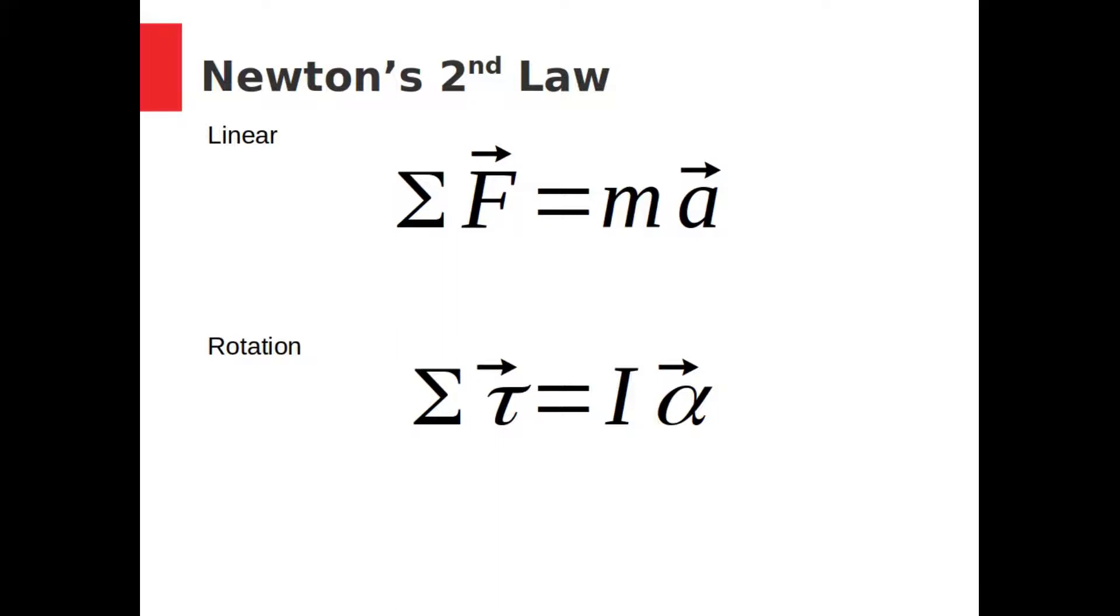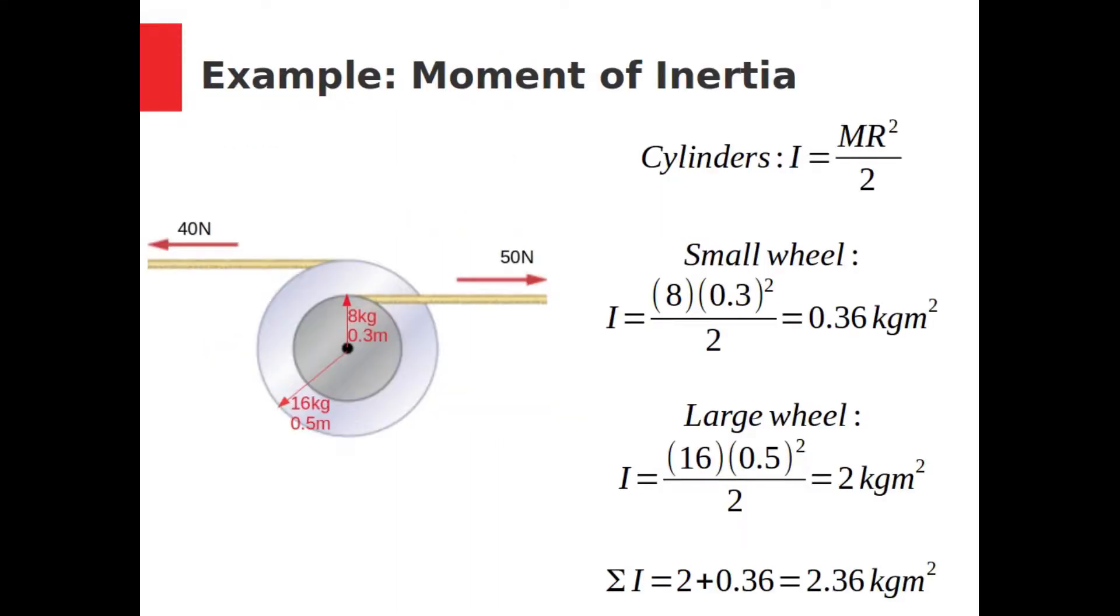Let's apply this to determine the angular acceleration of the wheels from earlier. The moment of inertia of the system is just the sum of the moments of inertia of each wheel. Suppose the smaller wheel has a mass of 8 kg, and the larger wheel a mass of 16 kg. Then the moment of inertia of the smaller wheel around its center is given by this equation. We saw the standardized moment of inertia equations for different shapes in the last video. We can work out that the moment of inertia is 0.36 kg meters squared for the smaller wheel, and 2 kg meters squared for the larger wheel.